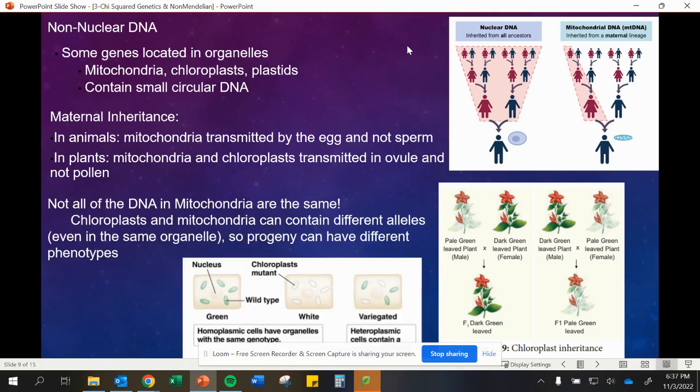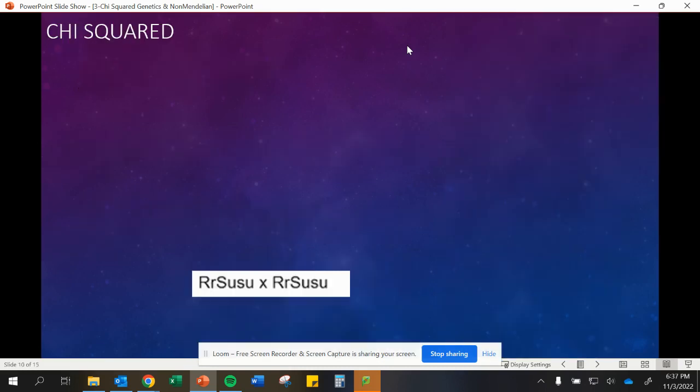Not all of the DNA in the mitochondria are the same. Chloroplasts and mitochondria can contain different alleles just like in our DNA from the nucleus. Progeny or offspring can have different phenotypes as well. Here's an example where chloroplasts can be slightly different. They can cause different colorations in the plant, white or variegated, depending on the DNA from that chloroplast.